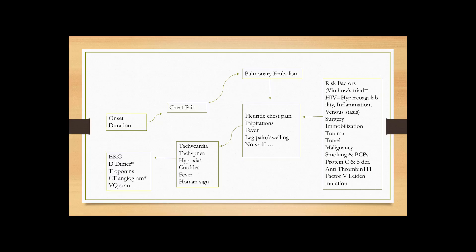The tests we order when suspecting PE include EKG first, because of the chest pain. EKG may show some ST-T changes, but the most common EKG finding is normal sinus tachycardia. D-dimer will be elevated — this is a very highly sensitive test, meaning if the D-dimer is low or normal, you can rule out PE. A patient with PE will definitely have a high D-dimer, but not all high D-dimers mean PE or DVT, as D-dimer can go up for many different reasons.